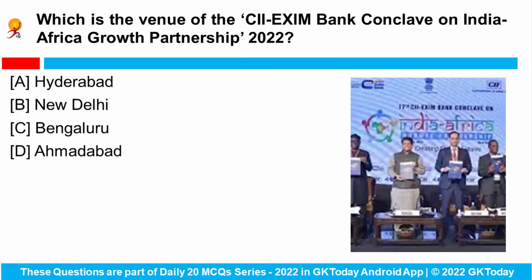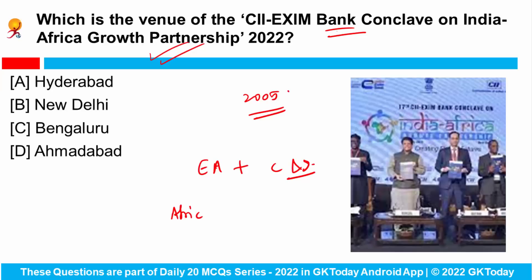Which is the venue of the CII Exim Bank Conclave on India-Africa Growth Partnership 2022? This conclave was launched in 2005 with the support of India's Ministry of External Affairs and Ministry of Commerce and Industry. The 17th edition of this conclave is currently being conducted in New Delhi, and high-level diplomats from around 17 African nations have participated.